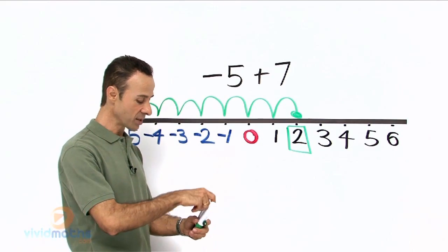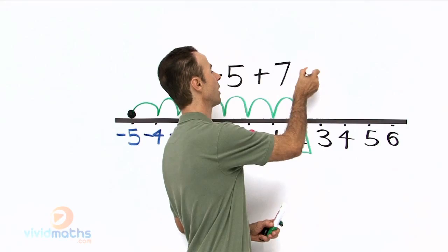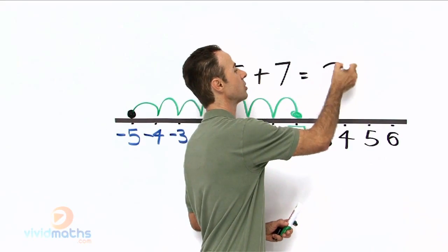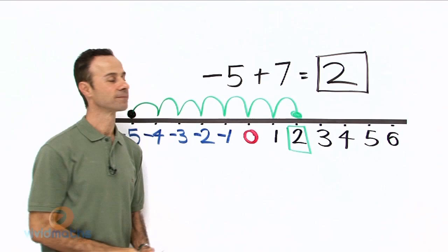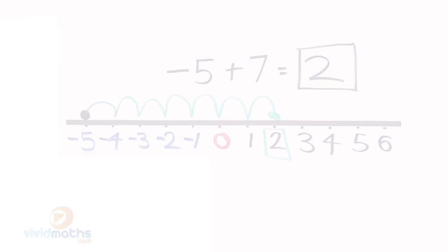So the answer to this quite simply is minus 5 plus 7 equals 2. Thank you.